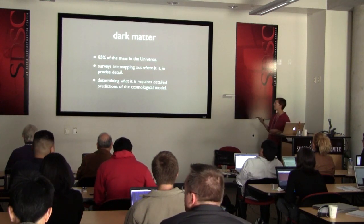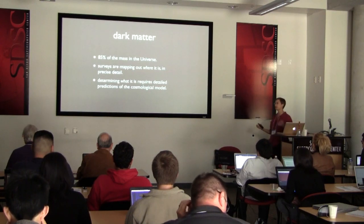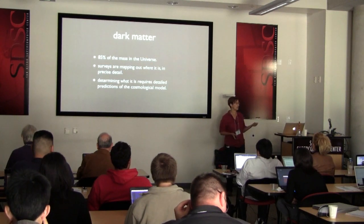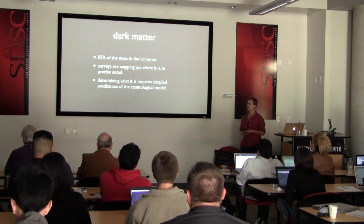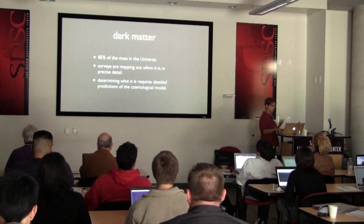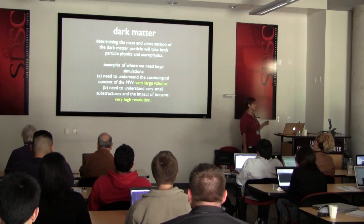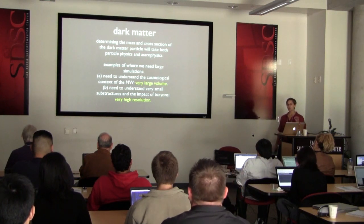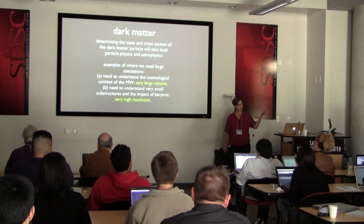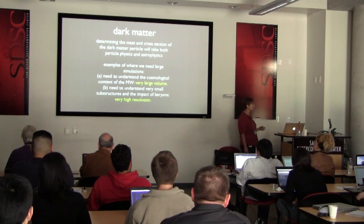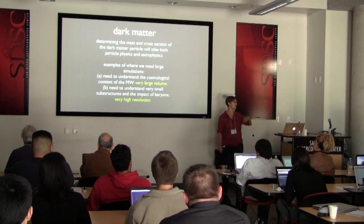A few words about dark matter: these galaxy surveys, especially with lensing, are mapping out where the dark matter is in precise detail. We have a very good handle on how much dark matter we have, but determining what it is requires much more detailed predictions of the cosmological model. Determining the mass and cross-section of the dark matter particle — or whether it is a particle — requires both particle physics and astrophysics. The simulation challenge is quite severe: if we detect dark matter in a direct detection experiment or see annihilation of gamma rays in the Milky Way halo, we need to understand the cosmological context of the Milky Way.